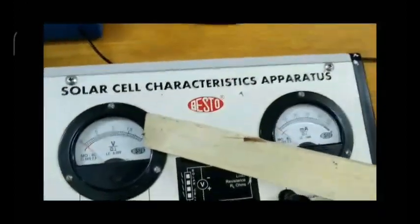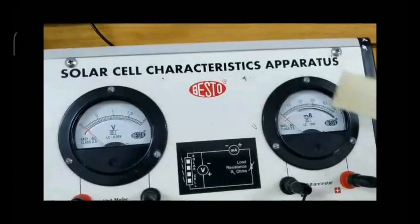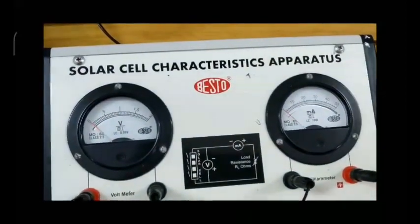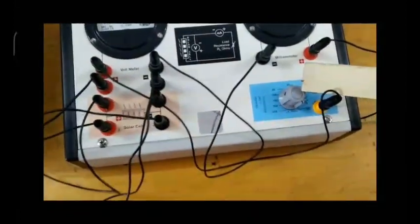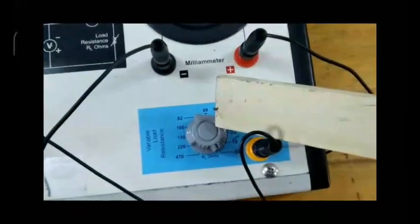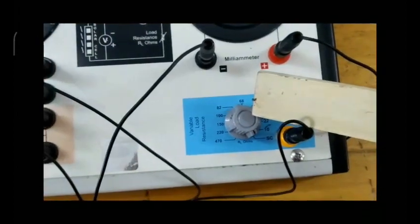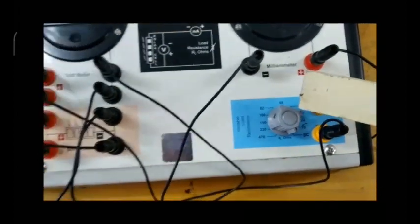You can see there is a voltmeter for measuring voltage and a milliammeter for measuring solar current, and a variable load resistor for varying the voltage and current values. The components are connected the same as the circuit diagram.